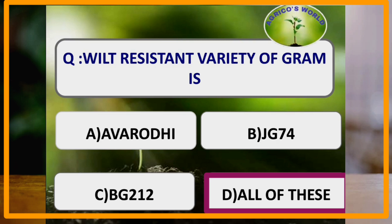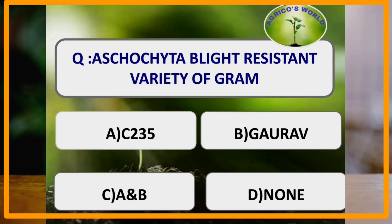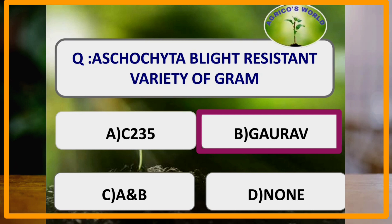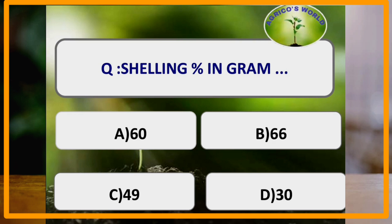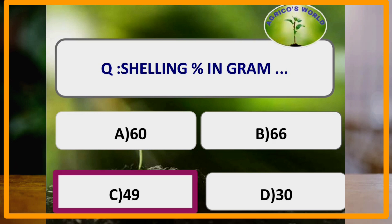Wilt resistant varieties of gram are Avrodi, JG74, and BG212 — all three are wilt resistant varieties of gram. Ascochyta blight resistant variety of gram is Gaurav. Mutant variety of gram is RS11. Shelling percentage in gram is 49%.